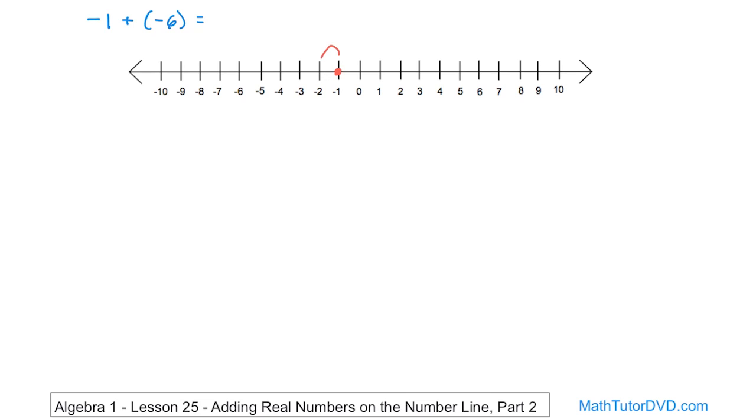It will be one, two, three, four, five, six, and I'll stick an arrow because that's where we end up. And so that's going to be a dot, a big fat dot right there. So the destination where we end up is negative seven. And because of that, the answer to this problem is negative seven. That's the final answer.